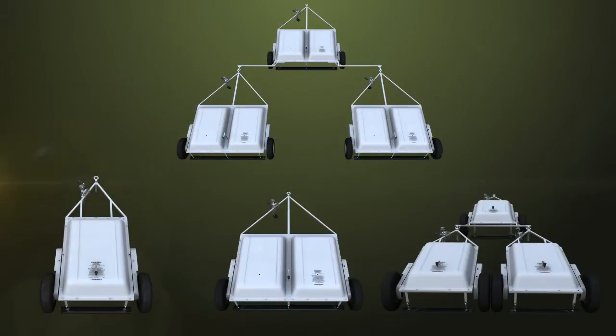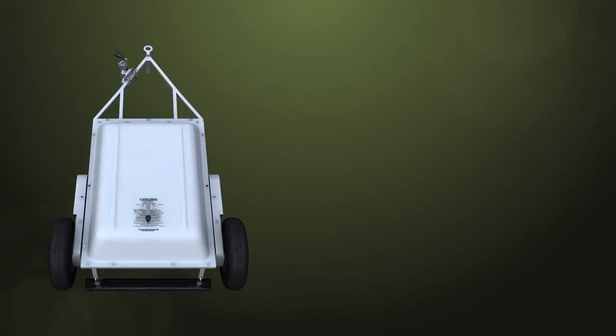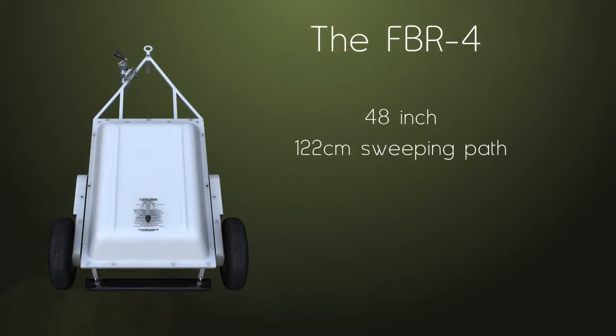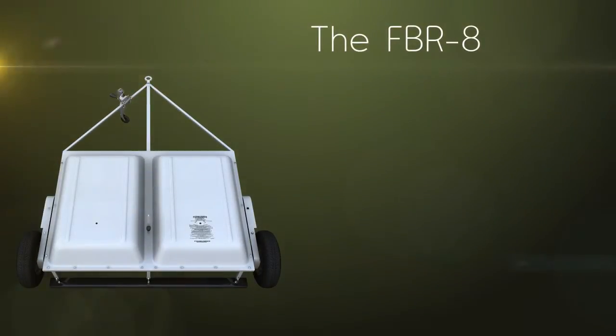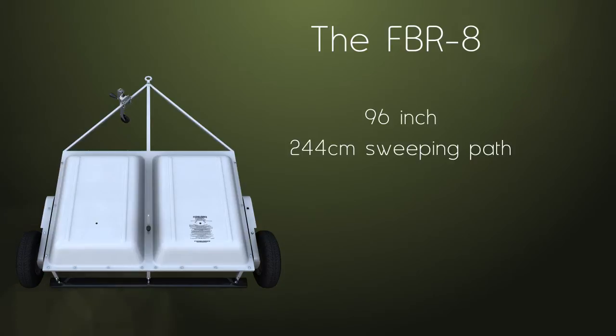The Fod Buster Rock Sweeper line is available in four different configurations. The FBR-4 with a 48 inch, 122 cm sweeping path. The FBR-8 with a 96 inch, 244 cm sweeping path.